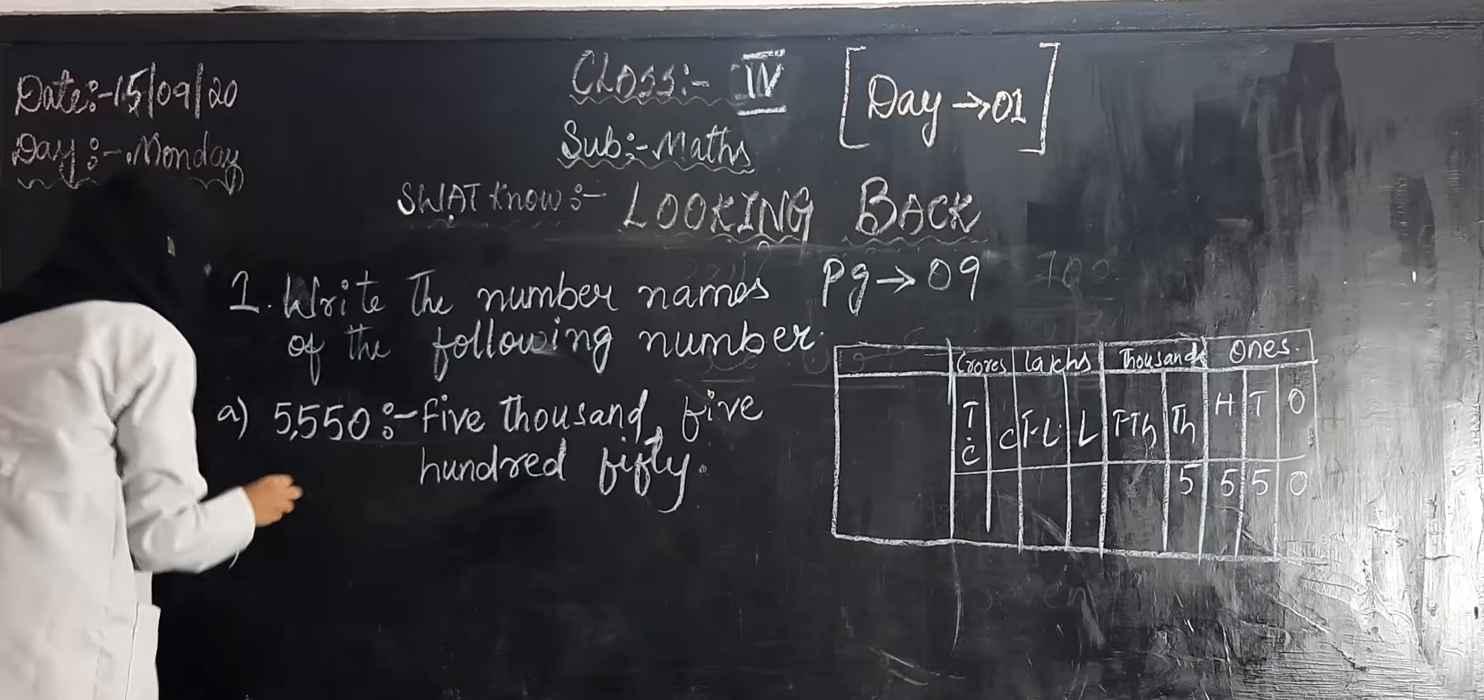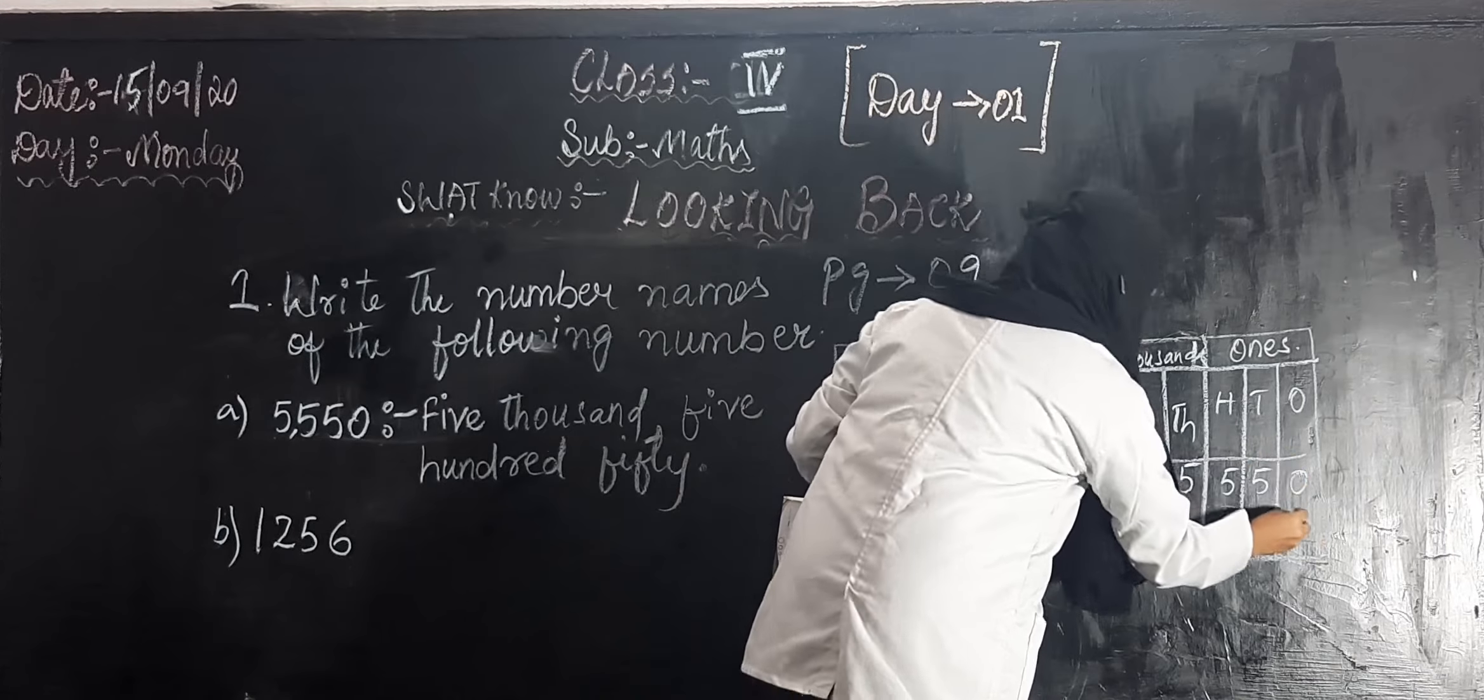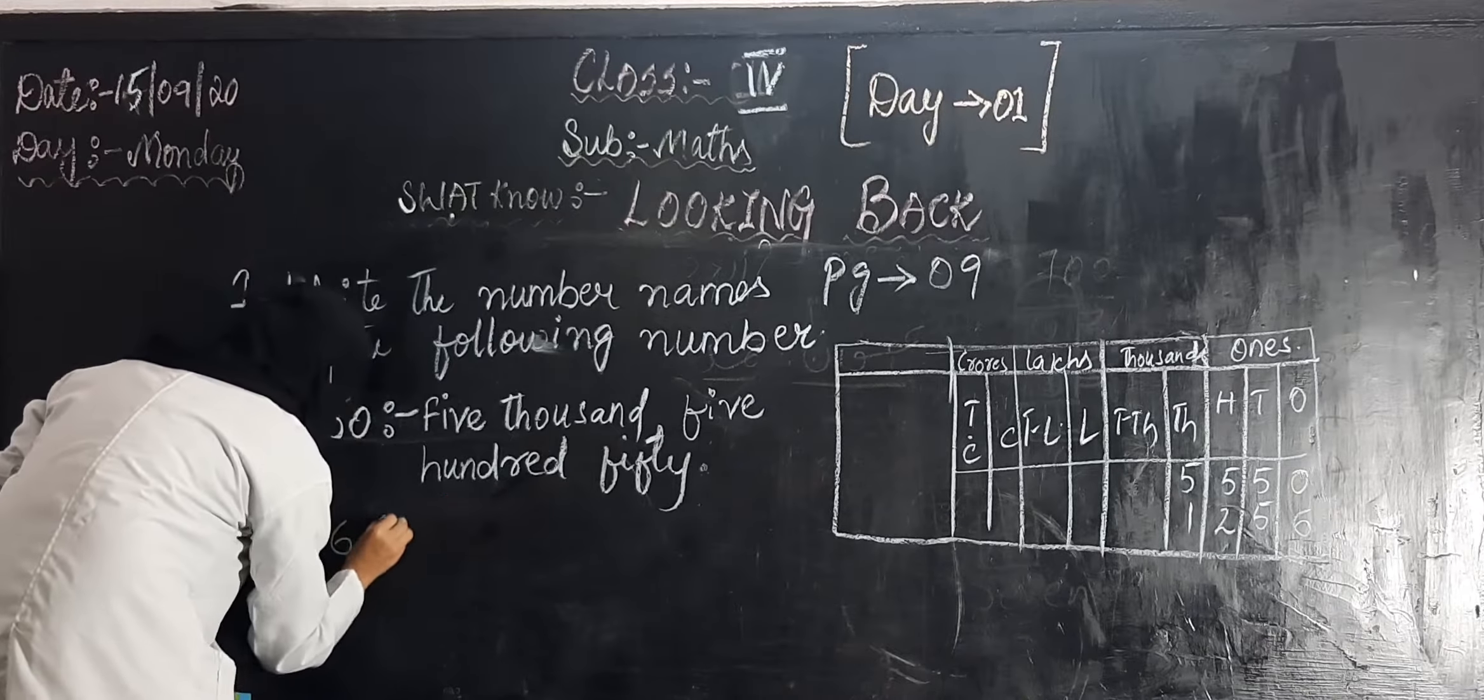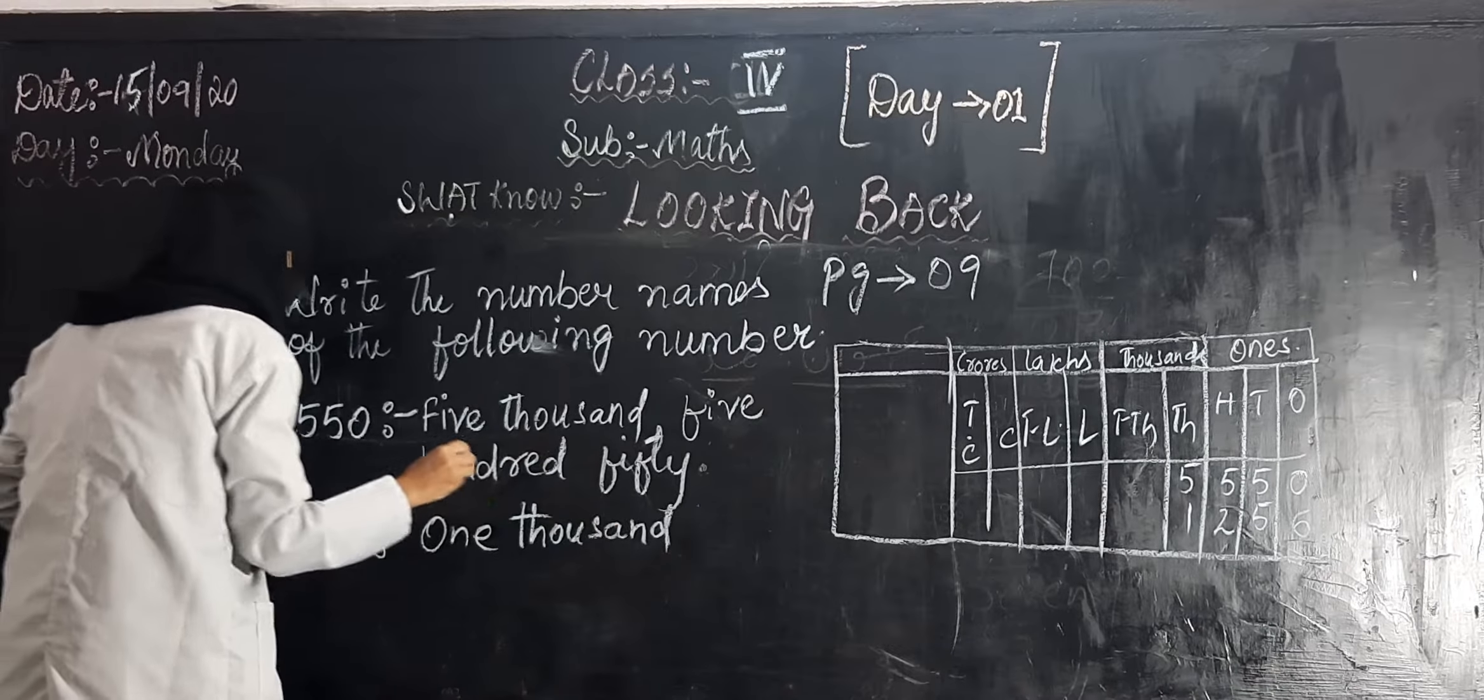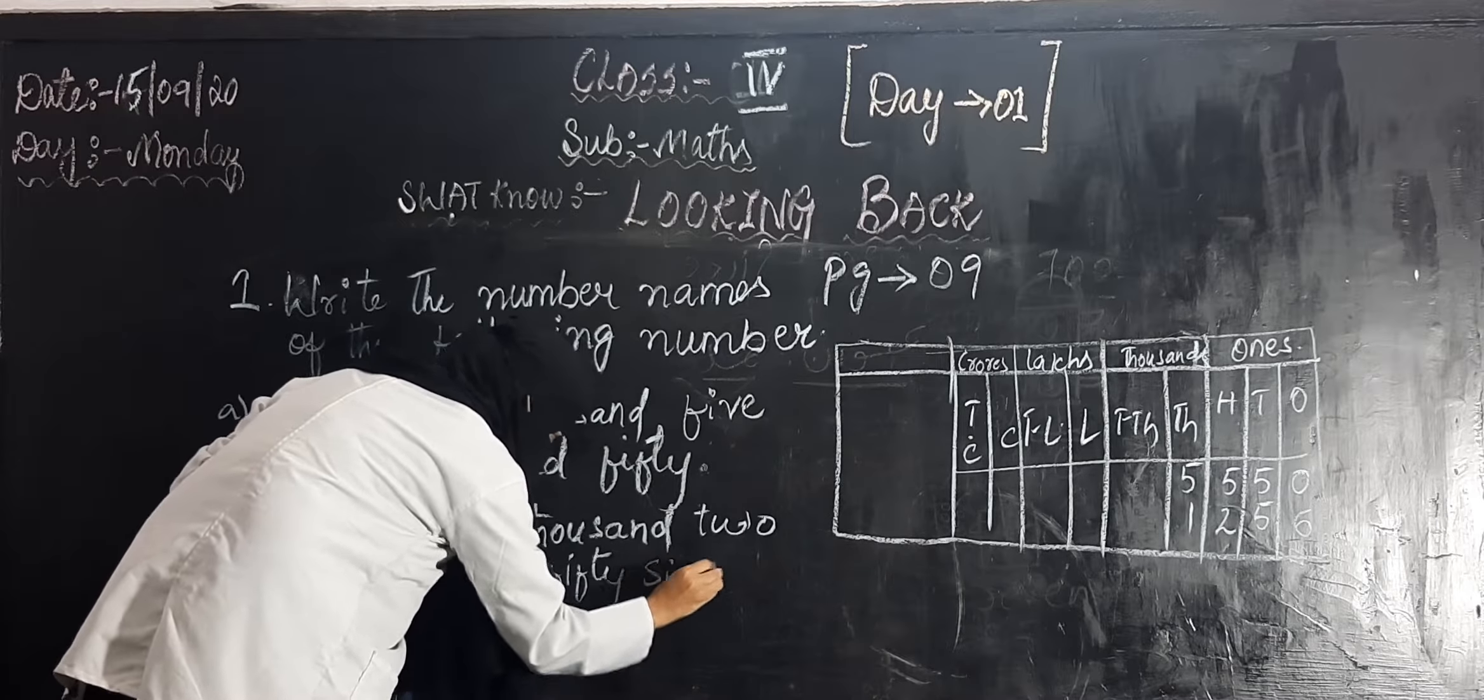Next, we will do the second thing also. Second question is, second number is one, two, five, six. How many digits are there? One, two, three, four. Six, five, two, one. What is the place value of one? Thousand only. How many thousand are here? Only one. One thousand two hundred fifty-six.